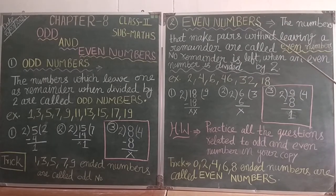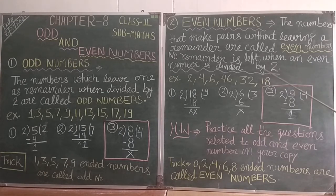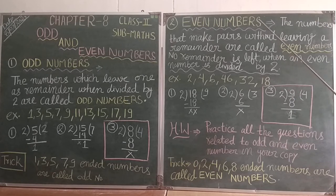Even numbers. What are even numbers? The numbers that make pairs or without leaving any remainder are called even numbers. No remainder is left when even numbers are divided by 2. When divided by 2, the remainder is 0.